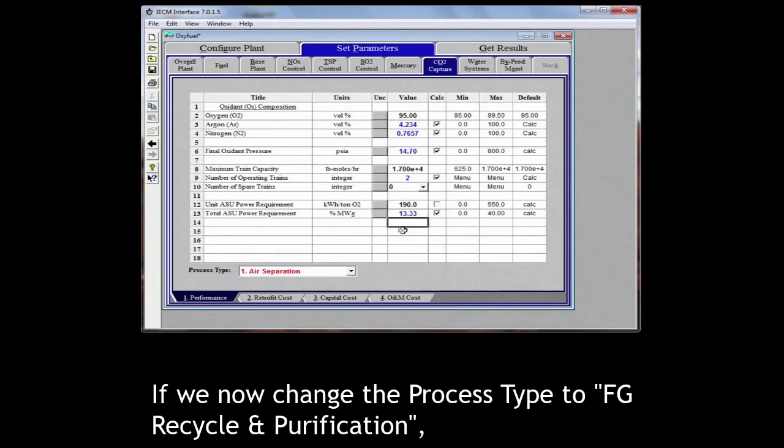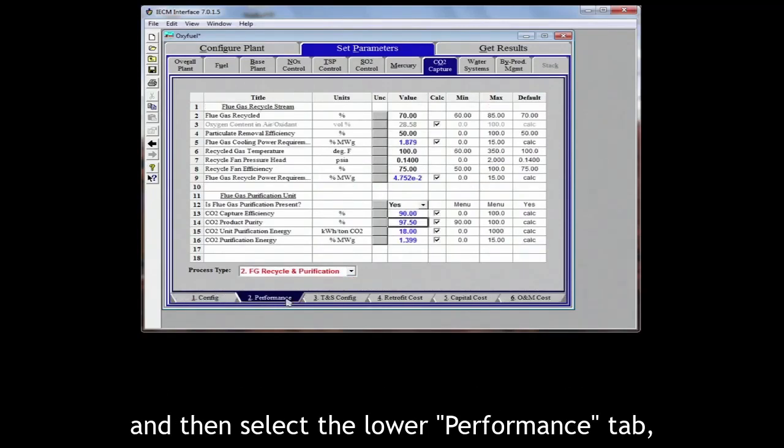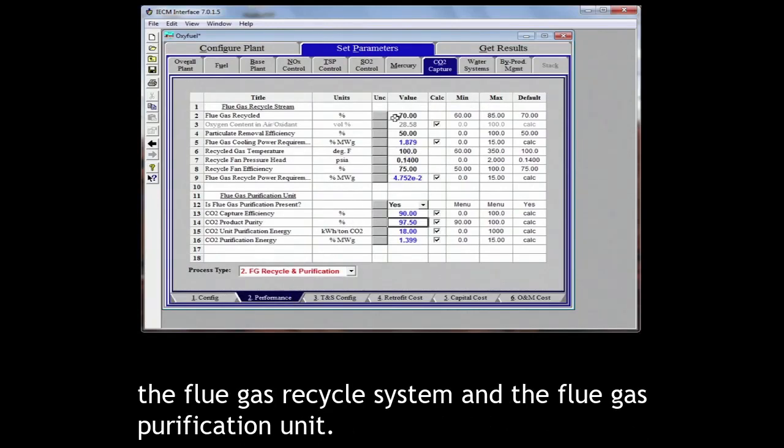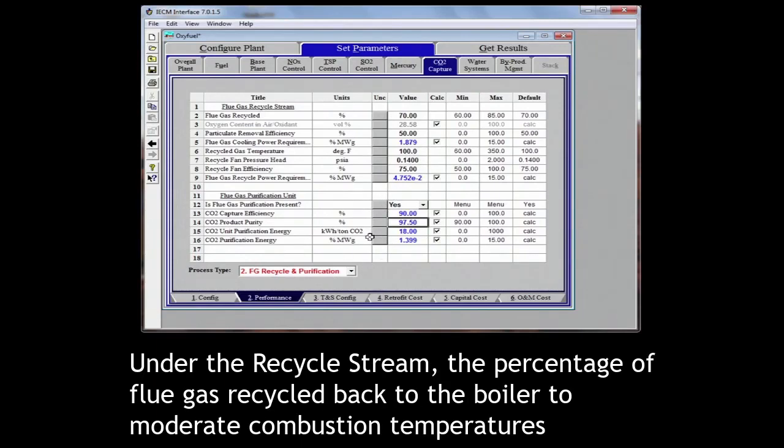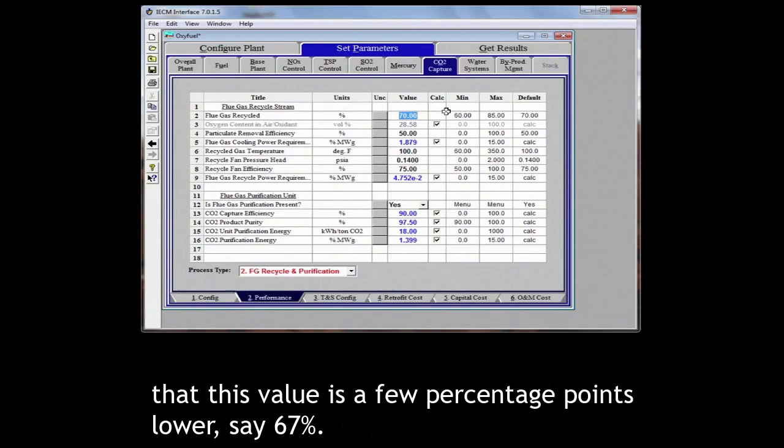If we now change the process type to FG recycle and purification and then select the lower performance tab, we can see the default performance parameters for both the flue gas recycle system and the flue gas purification unit. Under the recycle stream, the percentage of flue gas recycled back to the boiler to moderate combustion temperatures is set at a default value of 70%. For this example, we will assume that this value is a few percentage points lower, say 67%.